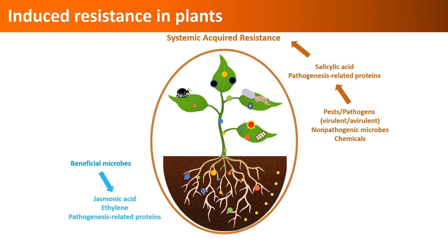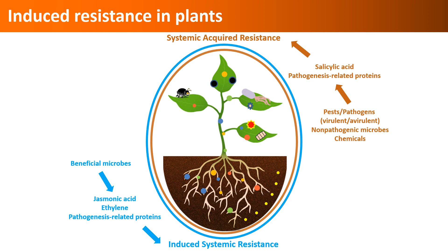When plants are exposed to beneficial microorganisms, another pathway involving the production of jasmonic acid, ethylene, and pathogenesis-related proteins is activated, and it is called induced systemic resistance. While systemic acquired resistance is a defense response to biotic and abiotic stressors, induced systemic resistance is preparing the plants for potential stresses. Various biologicals we discussed so far induce these responses, and using some of them prophylactically can improve plant health without the need for pesticide applications.